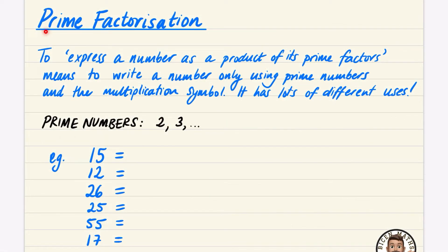The next video in this series is about prime factorization. If you get asked to express a number as a product of its prime factors, it means to write a number only using prime numbers and the multiplication symbol. It has loads of different uses, but for now you just need to trust that this is something we're going to want to do.